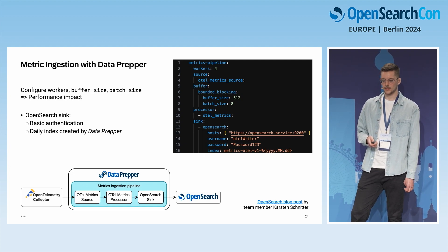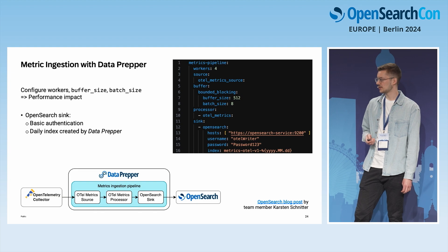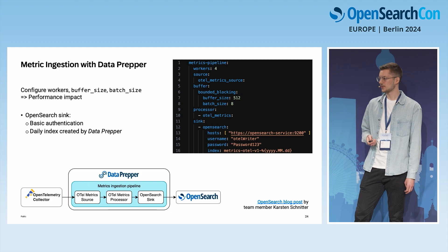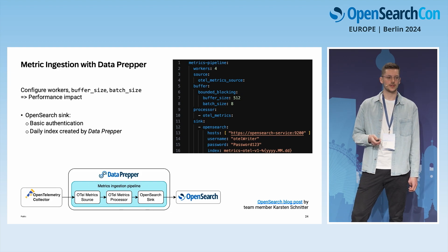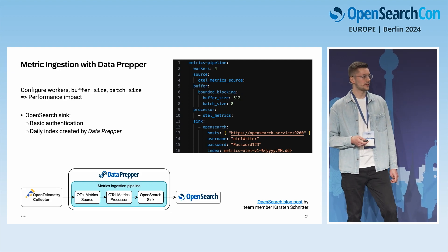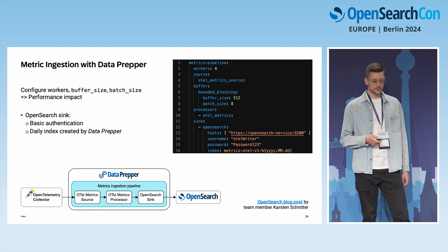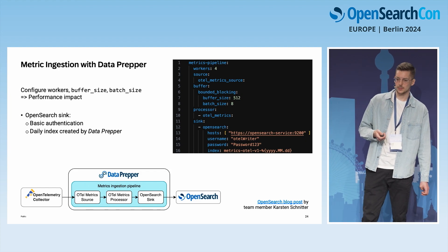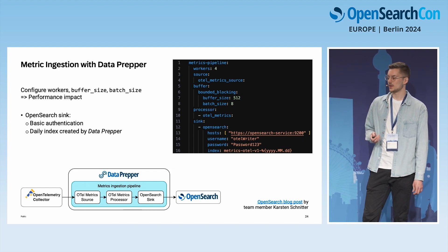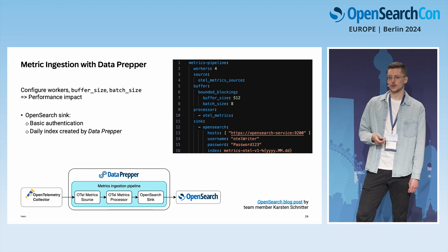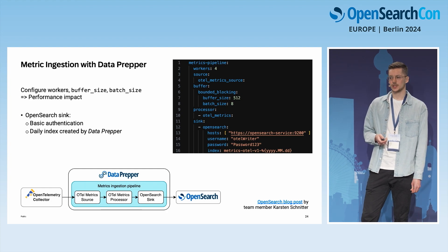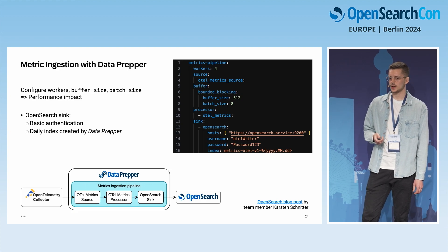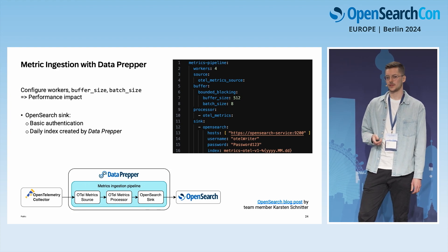There are some performance-impacting parameters such as the number of pipeline workers, buffer size, and batch size. If you want to know more about metrics ingestion, there's a blog post published by my colleague Carsten containing details on why it is useful to ingest metrics into OpenSearch even though it isn't a time-series database.